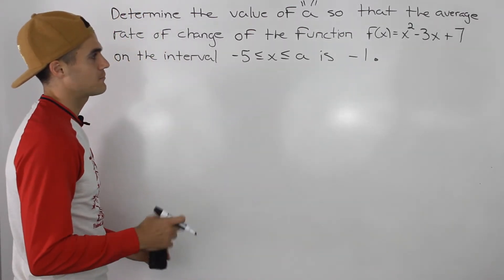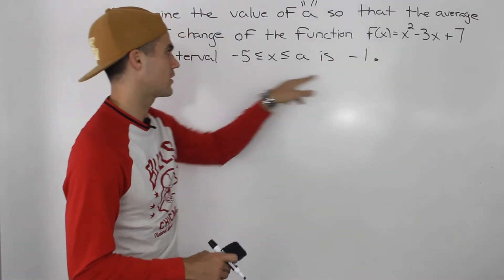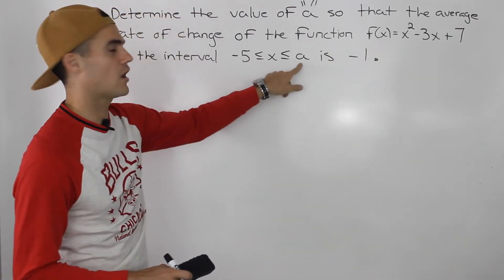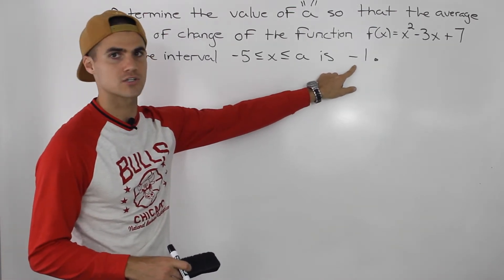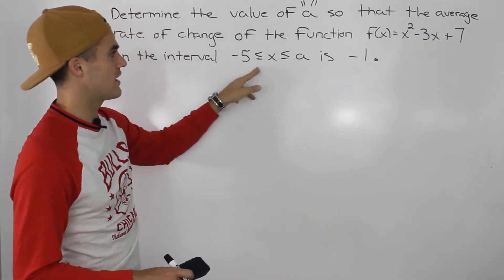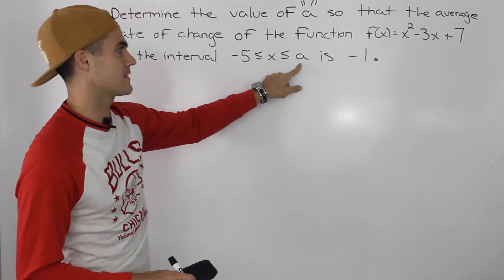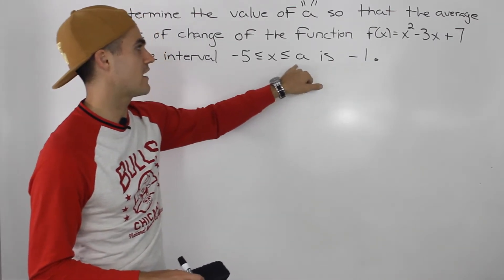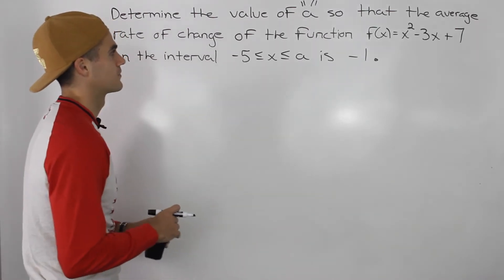Usually what's happening is we're given a function and we are given an interval with no constants, and we have to find the average rate of change. But in this case the interval has this constant a, and we are given the average rate of change and we have to find that constant. So we have to sort of work backwards here.